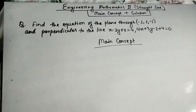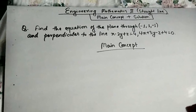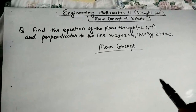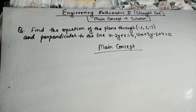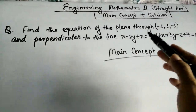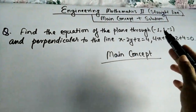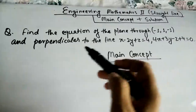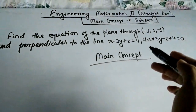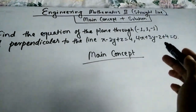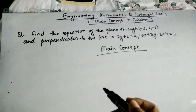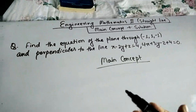Hello guys, welcome to ASP Hero. Today we are going to solve another problem on straight lines from the syllabus of Engineering Mathematics Second. Here we have main concept and solution. Our problem is: find the equation of the plane through the point minus 1, 1, minus 1 and perpendicular to the line x minus 2y plus z equals 4 and 4x plus 3y minus z plus 4 equals 0.